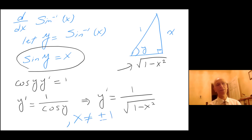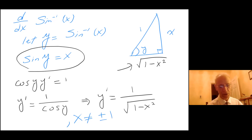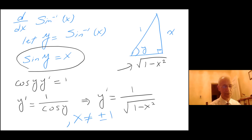With the understanding that x cannot equal plus or minus 1, because we cannot have 0 in the denominator. Now let's go ahead and show the derivative of cosine inverse of x.